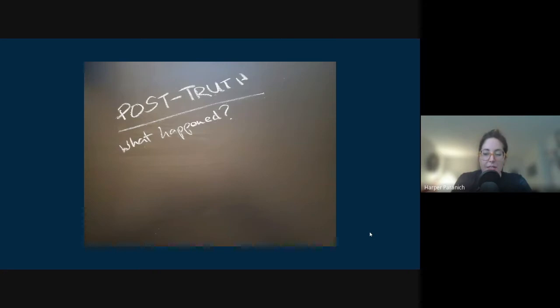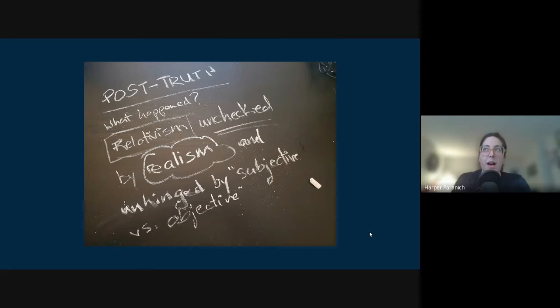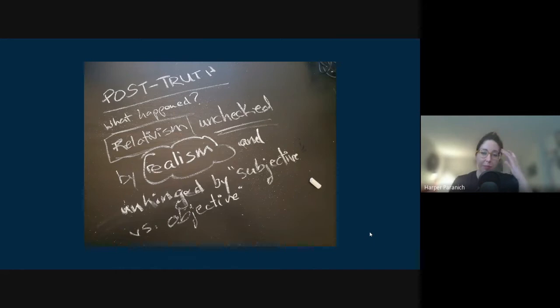However, when relativism became very much a part of the postmodern movement of the 90s, it went very much unchecked by realism and unhinged — my words — by the subjective versus objective dichotomy, which is something we will be revisiting later. Realism is the acknowledgement of that external reality. There is a consistency outside of us and our perceptions. Realism is kind of like if I were to pick up a rock and throw it at your face and it hit you — without even looking at your reaction, I would know that it would hurt because there is a consistent truth that exists between us. There is an external reality to our perceptions.